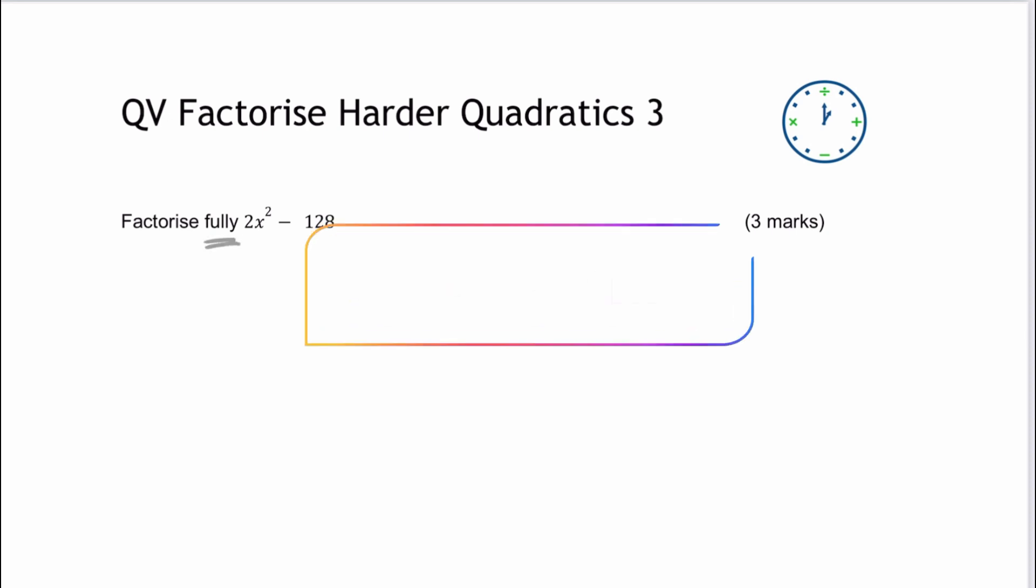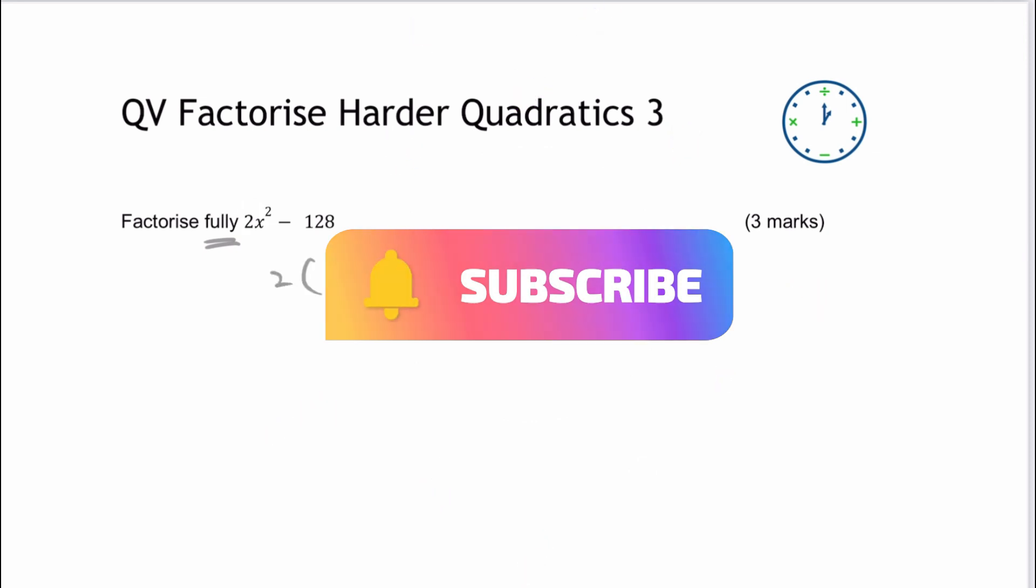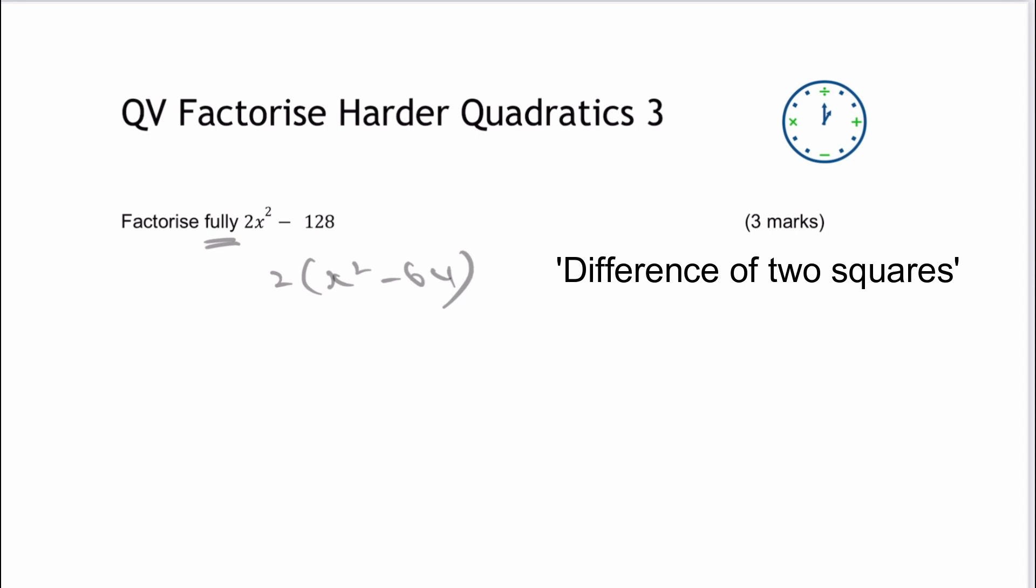Because what we can do is we can take two out and factorise it, and we get x squared minus 64. Now you might recognise that x squared minus 64 as being the difference of two squares. So in this particular case,